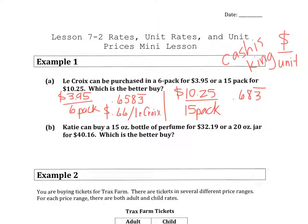And in the second one, it's going to be $0.68 per LaCroix or per can. So I would say the better buy is your first one because it's cheaper per one, per can.